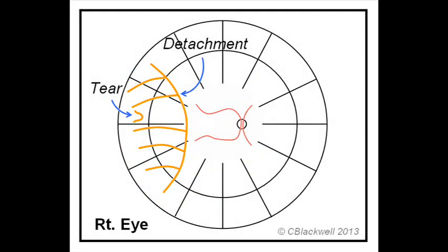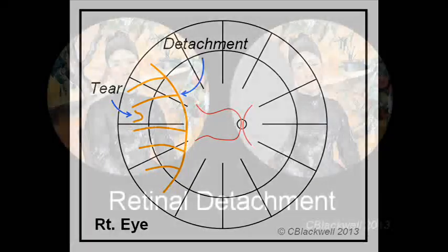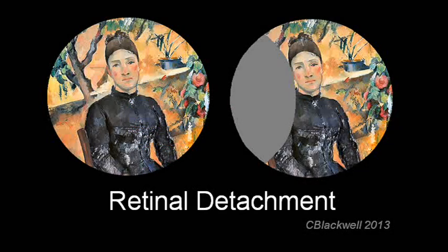Here is how we would draw a diagram of that detachment, the center of the diagram being the center of vision. Once the retina is detached, then that part of your vision goes missing, like in this illustration.